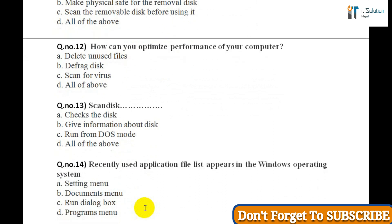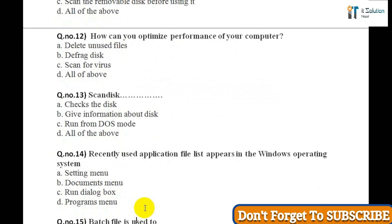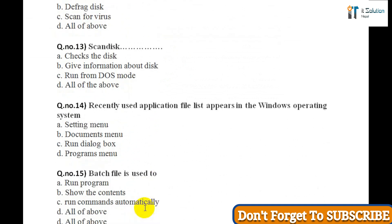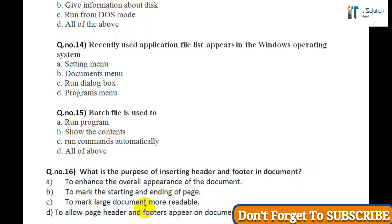Question eleven: To save your computer from virus you will do: A) Install antivirus software and run it, B) Make physical safe for the removal disk, C) Scan the removal disk before using it, D) All of the above. Question twelve: How can you optimize performance of your computer? A) Delete unused files, B) Defrag disk, C) Scan for virus, D) All of above.